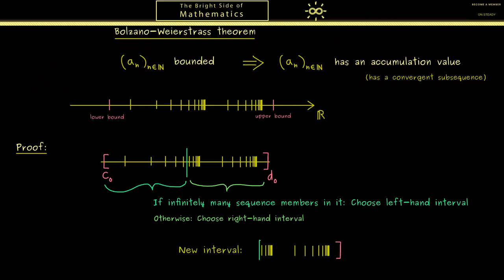So either the upper bound or the lower bound changed. Therefore we choose new names, namely c1 and d1. Then maybe not so surprising, we bisect the new interval again. And then we repeat the selecting and the bisecting over and over again.